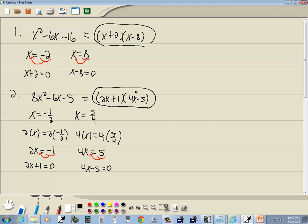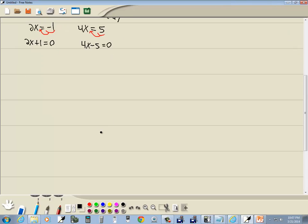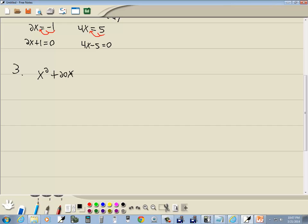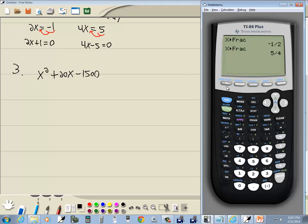Okay, let's look at a third problem that demonstrates that this isn't the perfect technique. But if you struggle with factoring, then this is definitely an option. We've got x squared plus 20x minus 1,500. Okay, so let's take a look. We'll press y equals, press clear, and then x squared plus 20x minus 1,500.